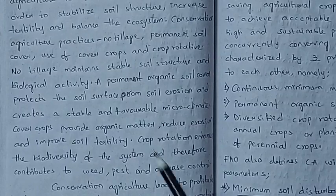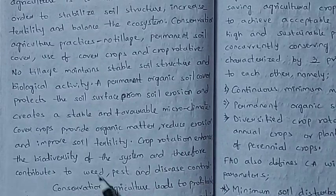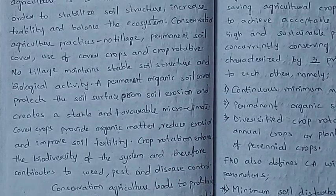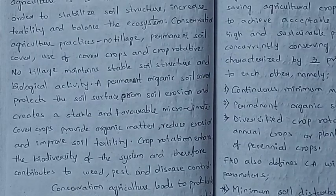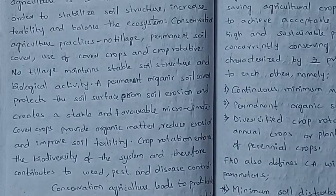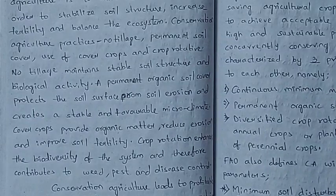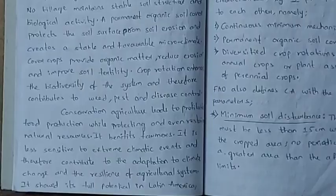Crop rotation enhances the biodiversity of the system and therefore contributes to weed, pest, and disease control. In crop rotation, different crops are grown alternately. This enhances biodiversity and contributes to sustainable land use in conservation agriculture.